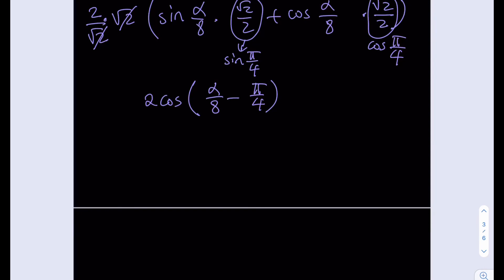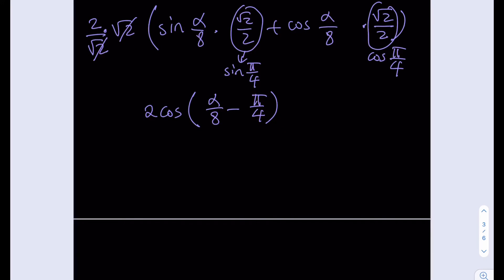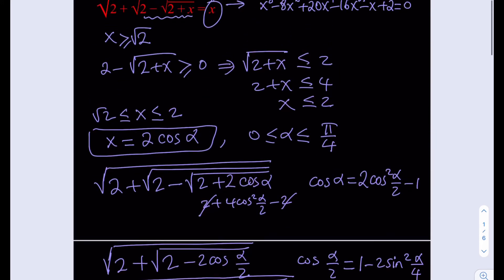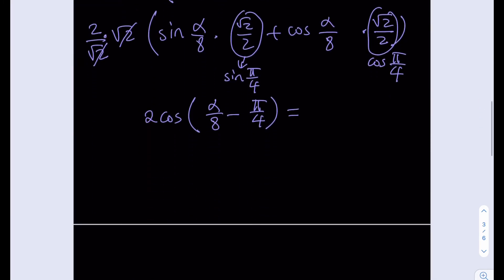After so many steps of simplifying, we end up with 2 cosine(alpha/8 minus pi/4), and the right hand side is 2 cosine alpha. We can cross out the twos and solve the equality of two cosines. The first branch sets alpha/8 minus pi/4 equal to alpha, plus an even multiple of 2n pi. Subtracting gives 7 pi over 8 equal to negative pi/4 plus 2n pi. Multiplying by 8/7 gives a negative quantity — alpha cannot be negative, so this branch is invalid.